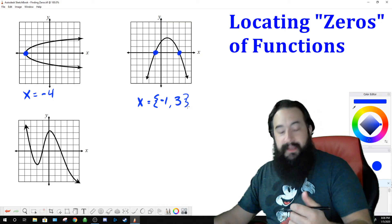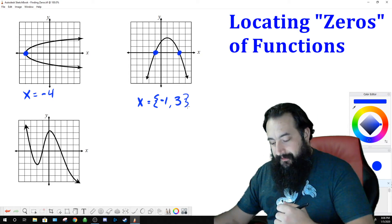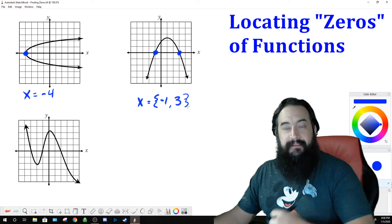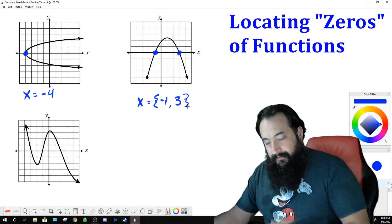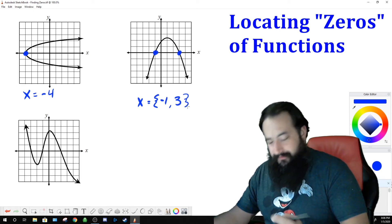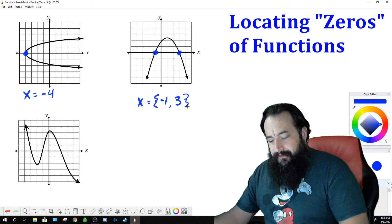Moving on to the last one, we have this nice curve here. This is a polynomial function, and it has a relative minimum and a relative maximum. These are just fancy vocabulary words. We're going to be getting into that a little bit, actually, next week. We're going to start talking about that stuff.